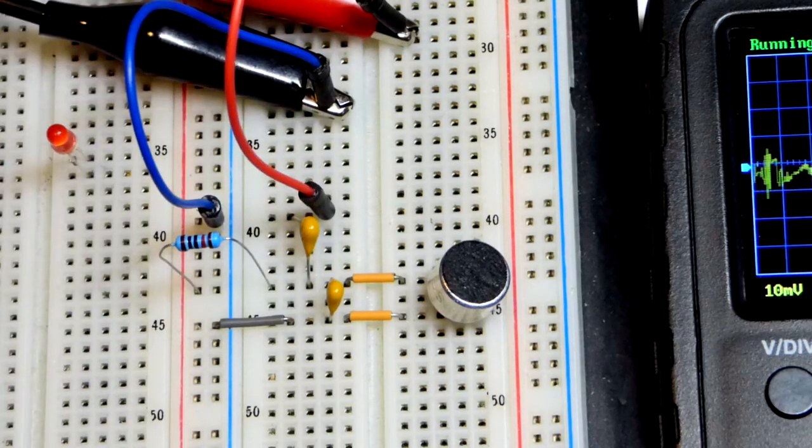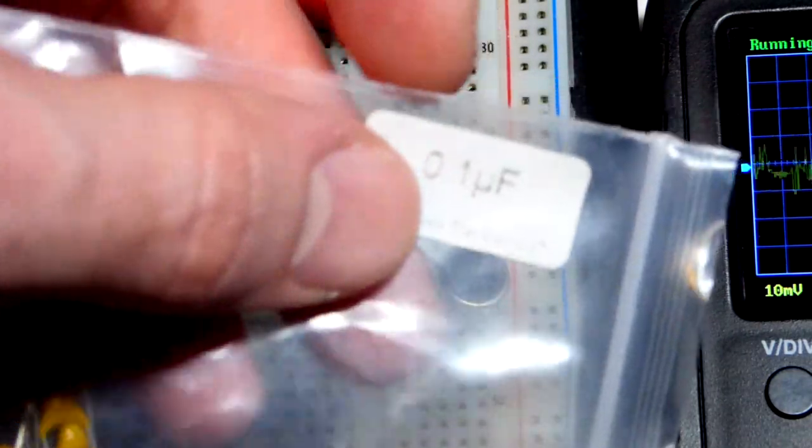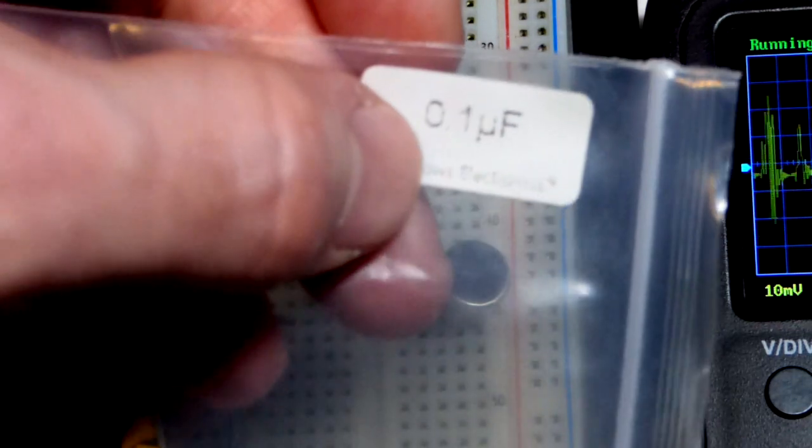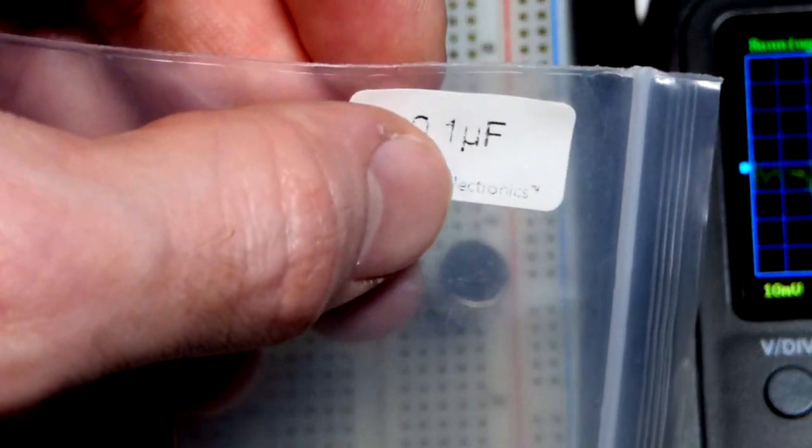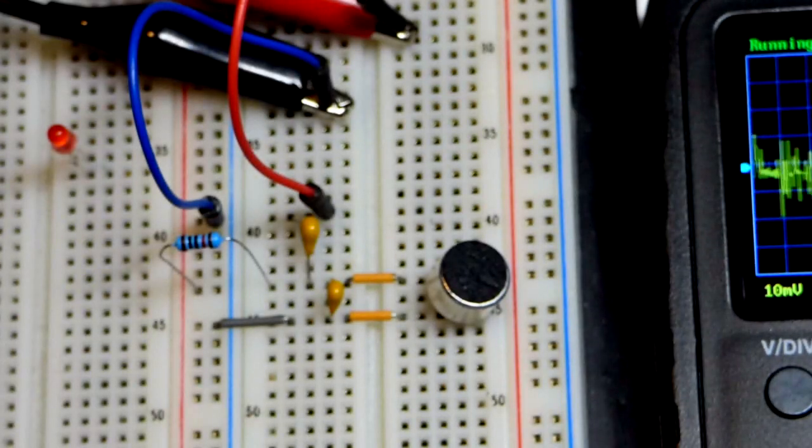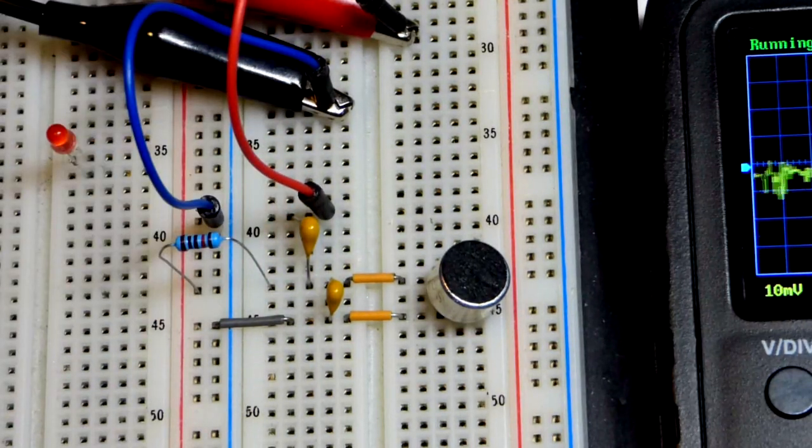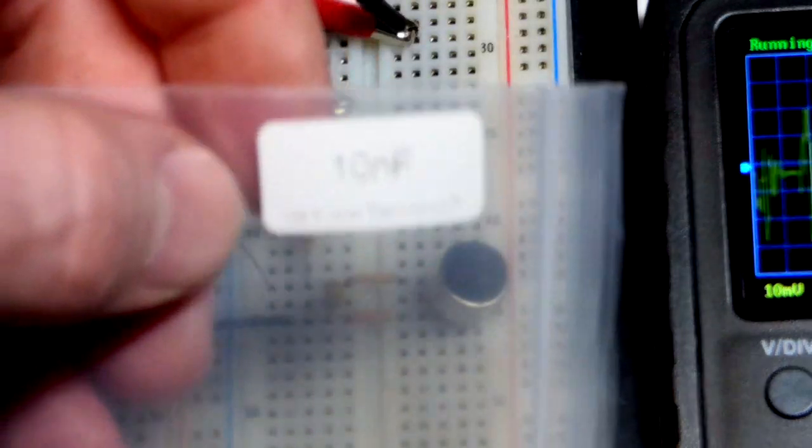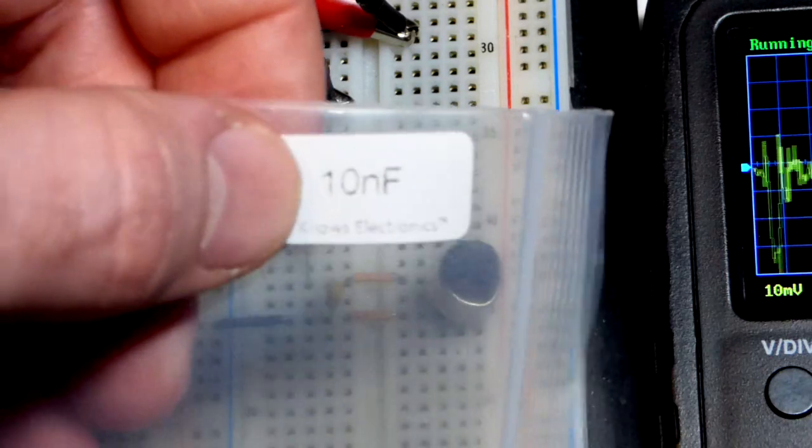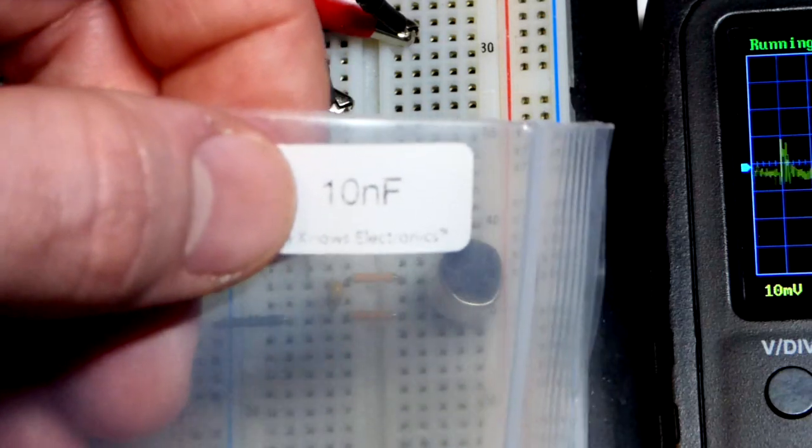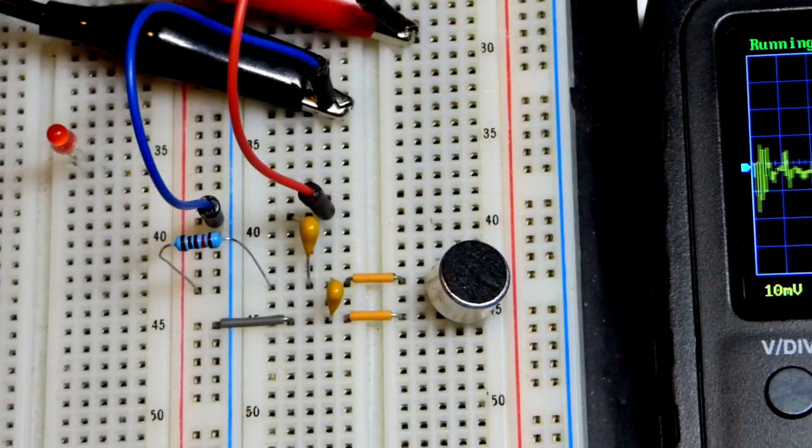So this is a 0.1 microfarad. As you can see here, that's the same as 100. There's a decimal point between the 0 and the 1. That's the same as 100 nanofarad. So that's the one going to the oscilloscope. The one that is parallel to the condenser microphone, that is a 10 nanofarad. So one-tenth of the capacitance.